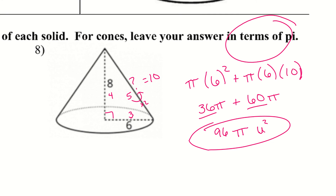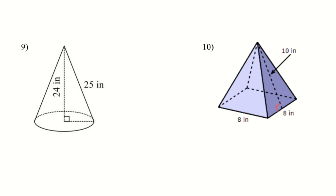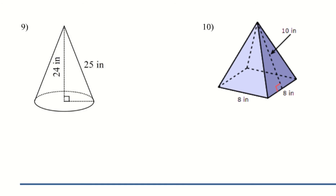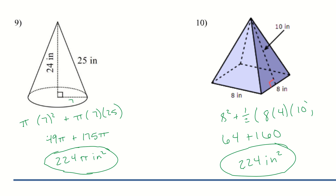Let's check out problems 9 and 10 — I want you to try those. We have one cone and one pyramid. With the cone, remember you have that 90-degree angle, so you'll need to figure out the radius. Go ahead and pause the video and try these two. Here are your last two solutions, 9 and 10 for cones and pyramids. This unit covers all the shapes we've been working with, just focusing on surface area. Be sure to check your formulas, ask your teacher if you need help, and have a wonderful rest of your day.